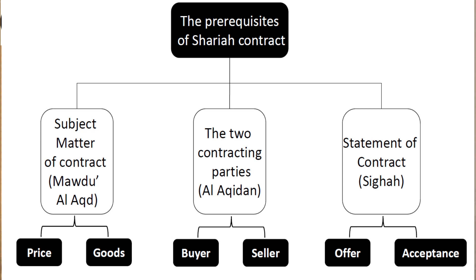In short, there are three pillars, or in detail you may say six pillars, because each pillar represents two components: price and goods, buyer and seller, and offer and acceptance — making six elements in total. Each one has its own terms and conditions, but in brief we say three pillars each representing two components.